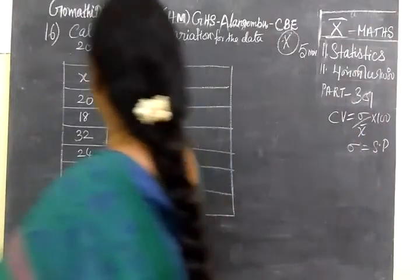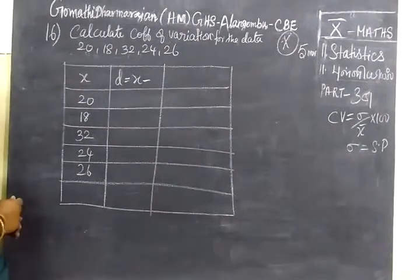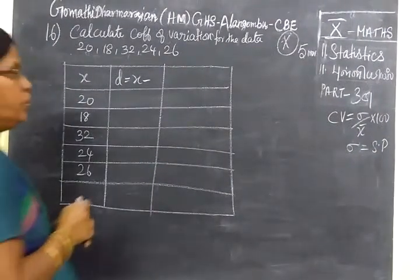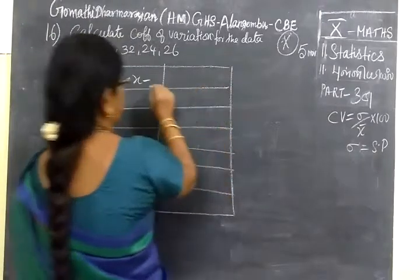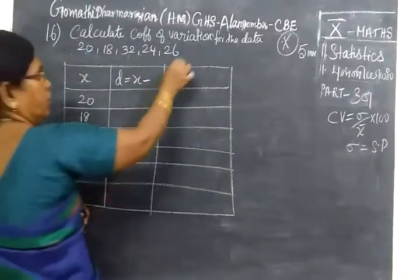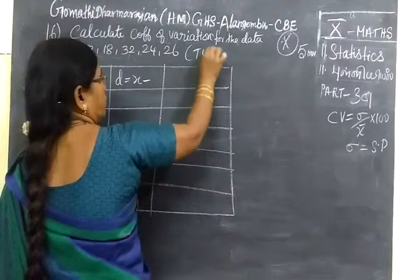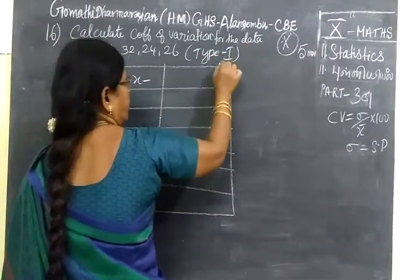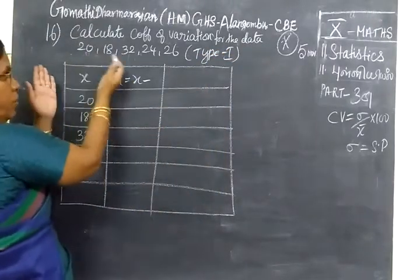So to find standard deviation we know that for standard deviation it will be discrete value, Type 1. Type 1 means discrete value.